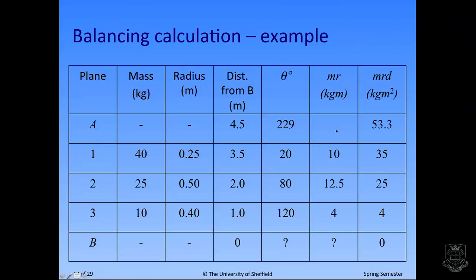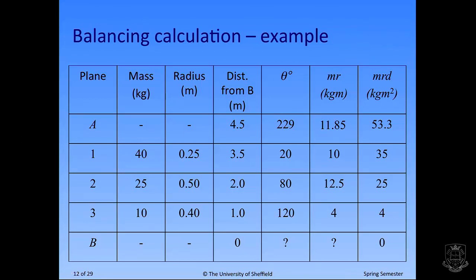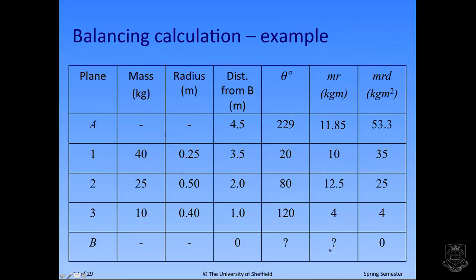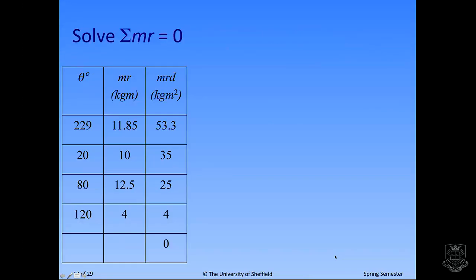What we're still missing is the MR value at bearing A and its angle. Because we now know D and MRD, we can work out what MR is at A. In the static balance column, we've got one missing element and one missing angle. So we're going to solve the static balance the same way, but this time using the MR values, not the MRD values.